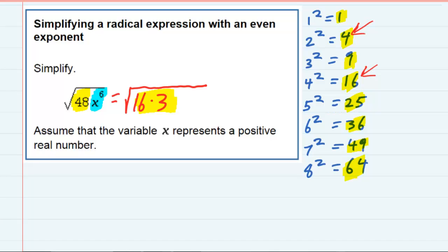So I've really just rewritten that part, and the nice part about the x to the sixth is I want it to be written as a variable raised to an even exponent. It is already written as a variable x raised to an even exponent.